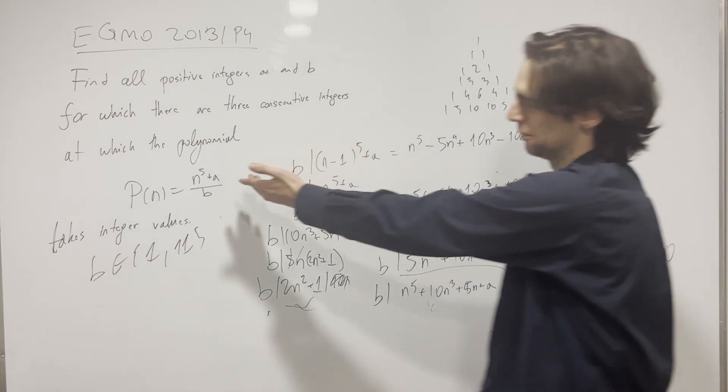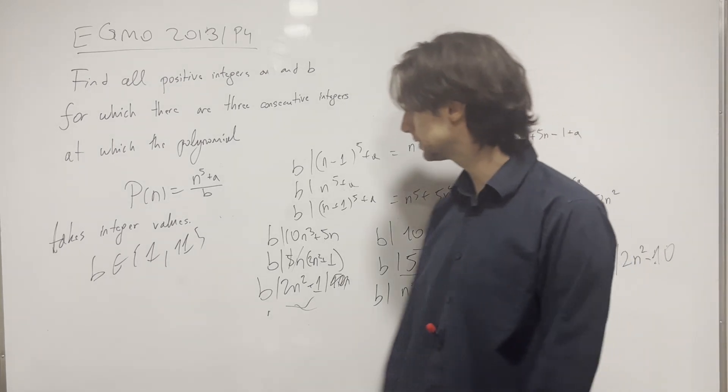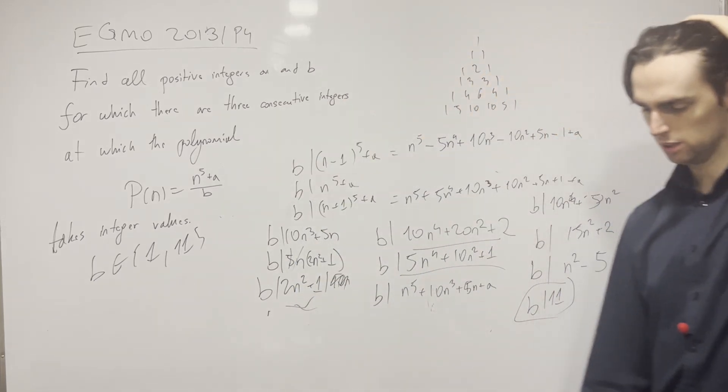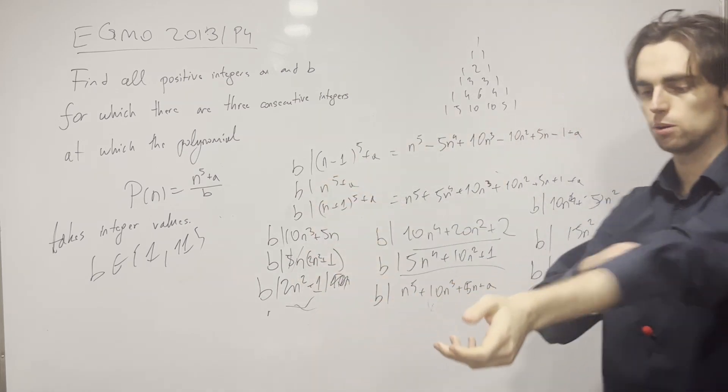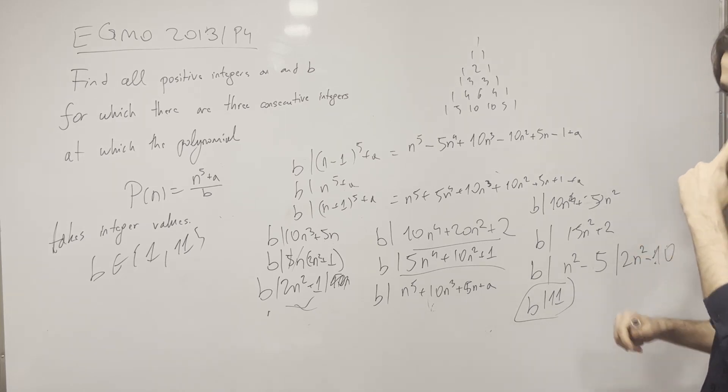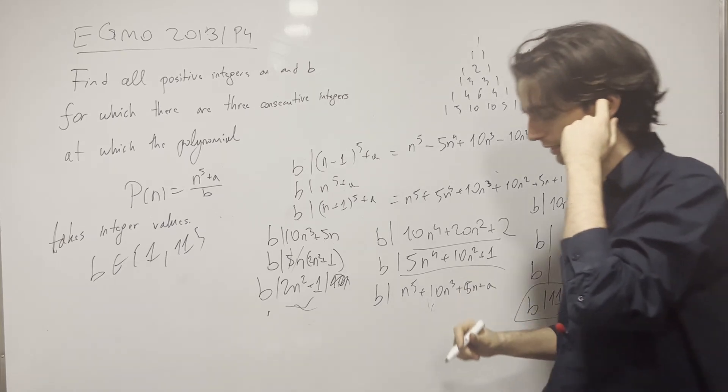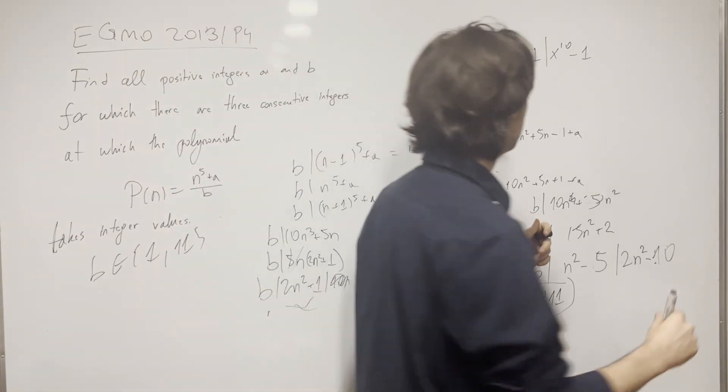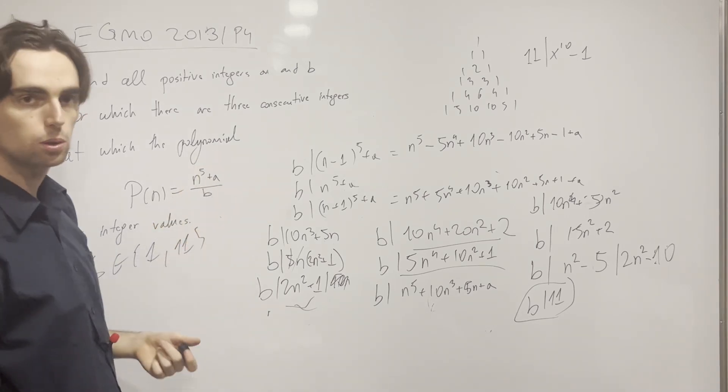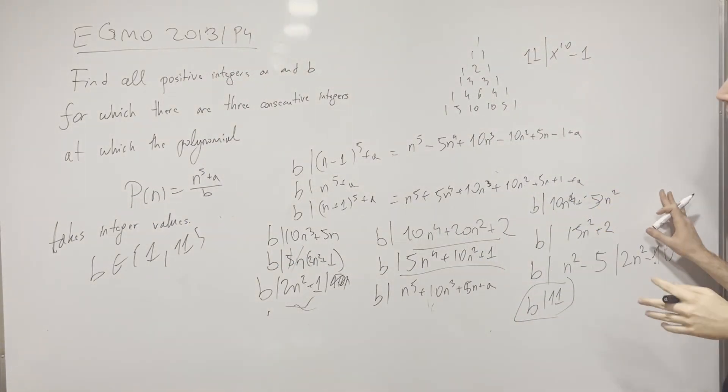So b, we've now found out, has to be either 1 or 11. Now if b is 1, then pretty much this is n^5 + a, we're done. But what if it's 11? Do we have an n and then corresponding... do we need to find all positive integers a and b for which this is true? So let's look at maybe remainders modulo 11, x to the power of 5.